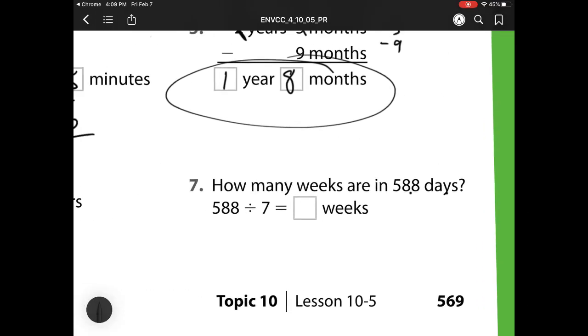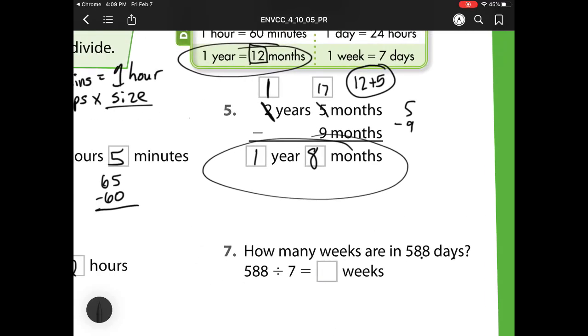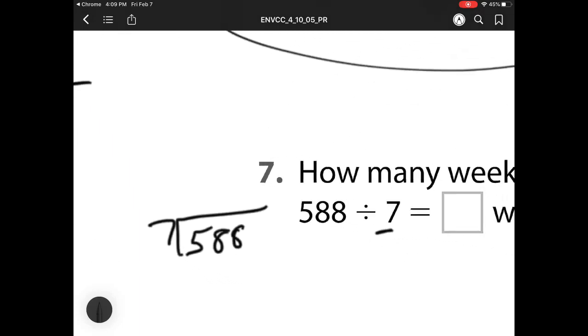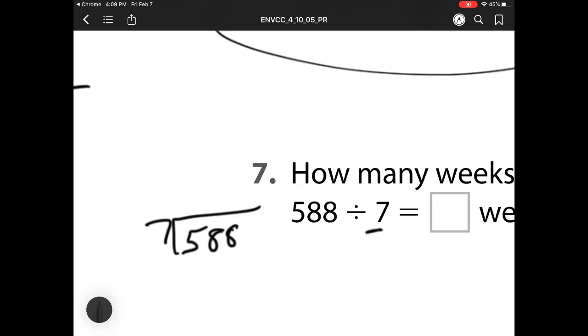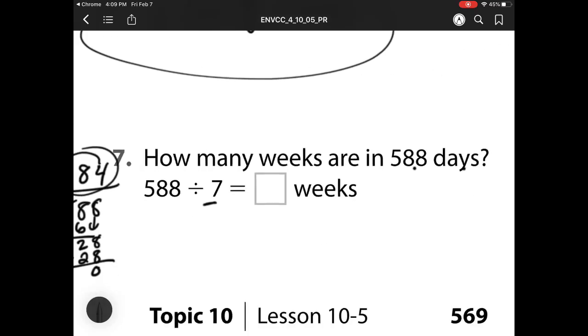For number 7, how many weeks are in 588 days? If I look right up here, I notice that 1 week is equal to 7 days, so I need to break that up into groups of 7. So I have 588 divided by 7. 7 goes into 58 8 times. Multiply. Subtract. Check. 2 is less than 7, so I can bring down. 7 goes into 28 4 times. Multiply. 4 times 7 is 28. Subtract. Check. 0 is less than 7. There's nothing to bring down, so I'm left with 84 weeks.